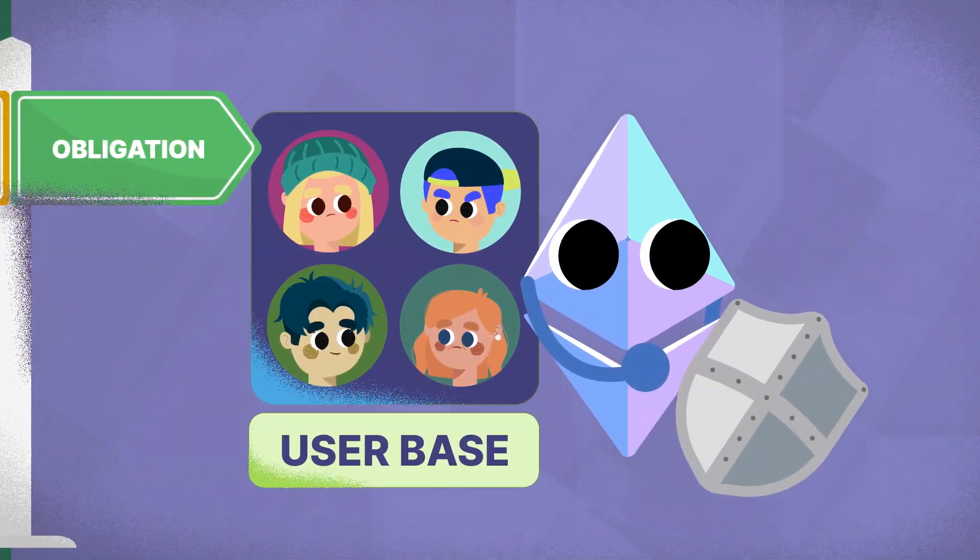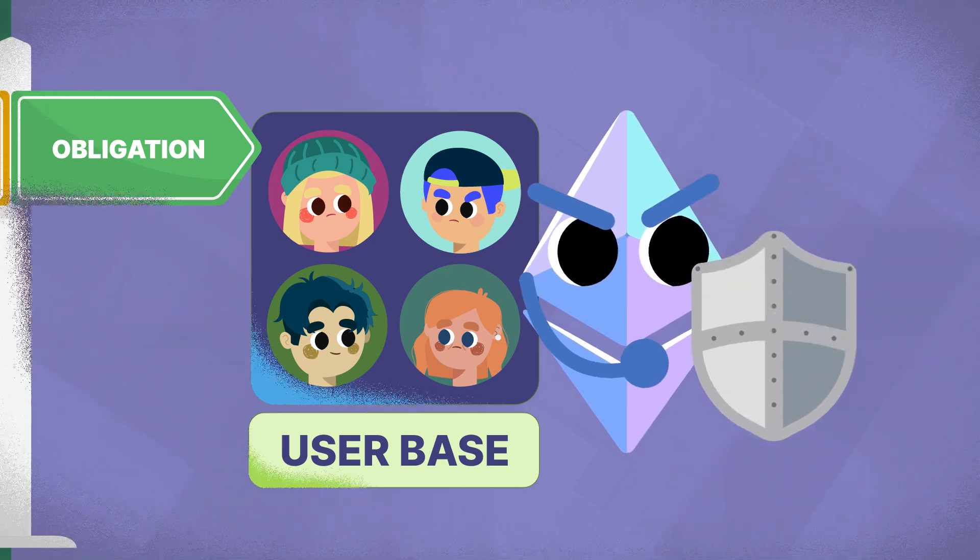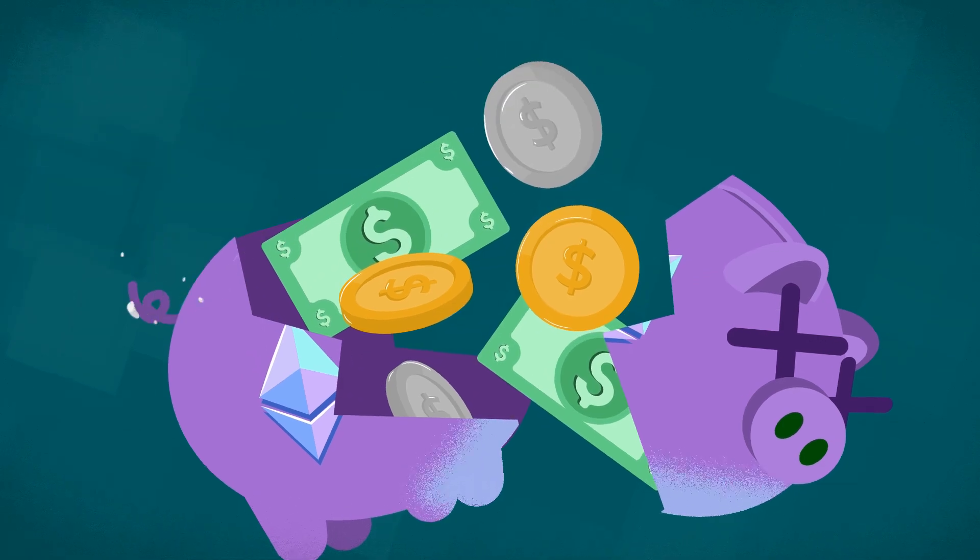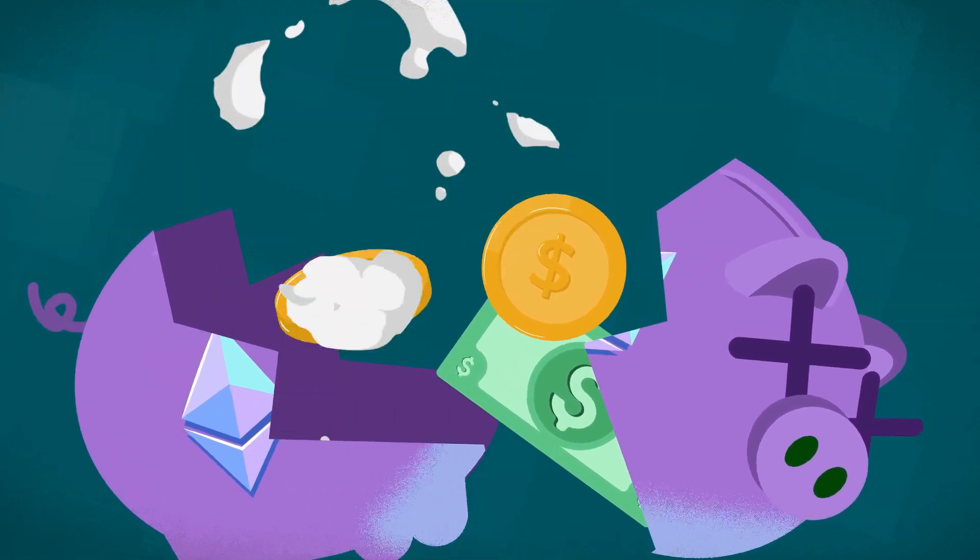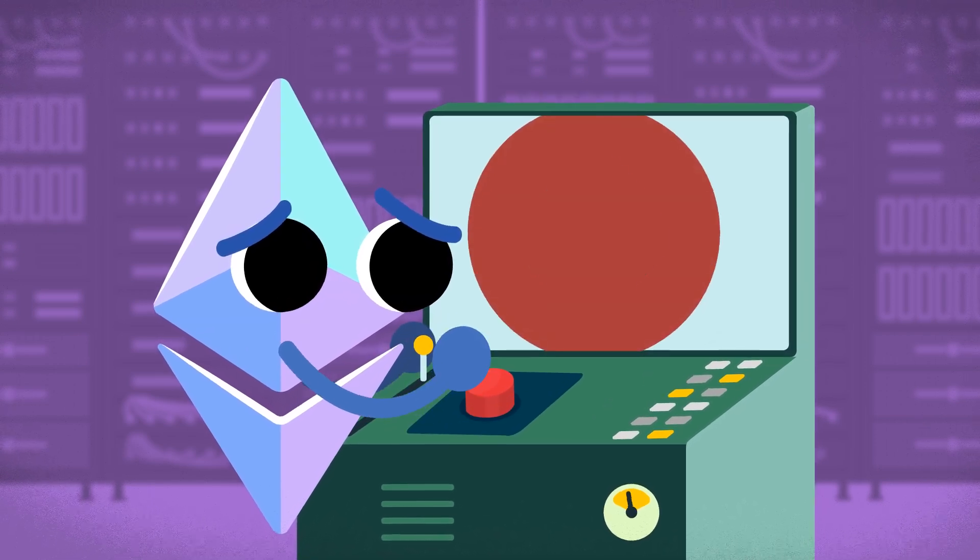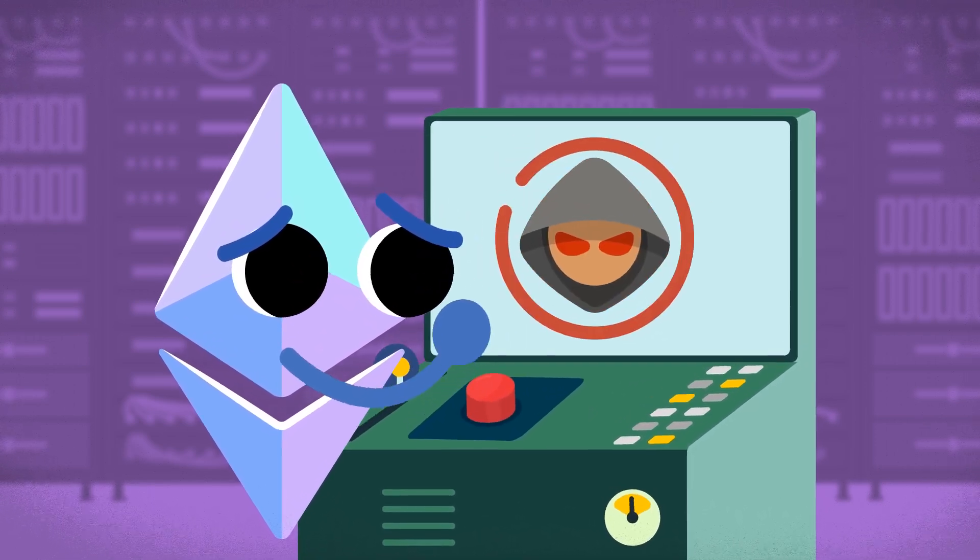But on the other hand, there were people who felt Ethereum had a moral obligation to protect its users. People invested real money, and they were watching their savings disappear. Those in this camp believed Ethereum had to act fast to prevent further theft and restore confidence in the blockchain.